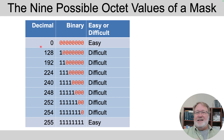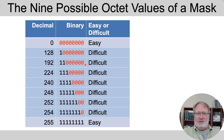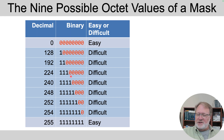You'll want to have this reference table memorized for this process. Every dotted decimal mask has four octets, and those values can only be one of nine numbers. The reason is that in binary, the matching eight-bit number follows the convention of not interleaving ones and zeros — if there are ones, they're on the left, and if there are zeros, they're on the right.